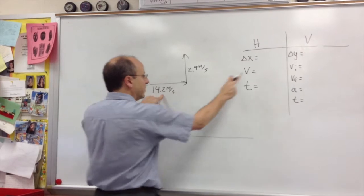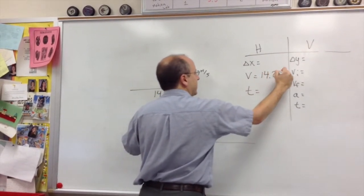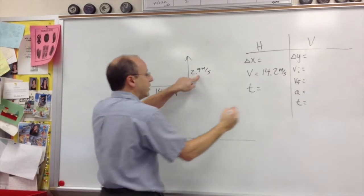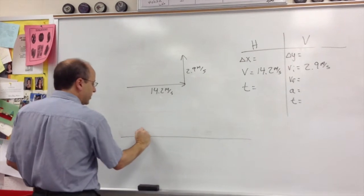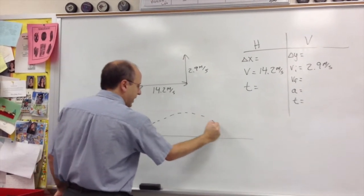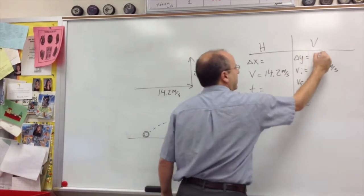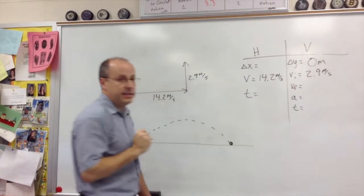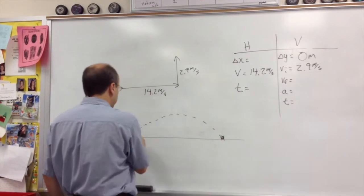We take those numbers and move them into our chart. So the 14.2 is the horizontal speed when it leaves her stick. The 2.9 is the vertical speed when it leaves her stick. Realize that the ball is going to go up and land back at the same height that it started. So your delta y will be 0. It has no change in height from end point to start point.